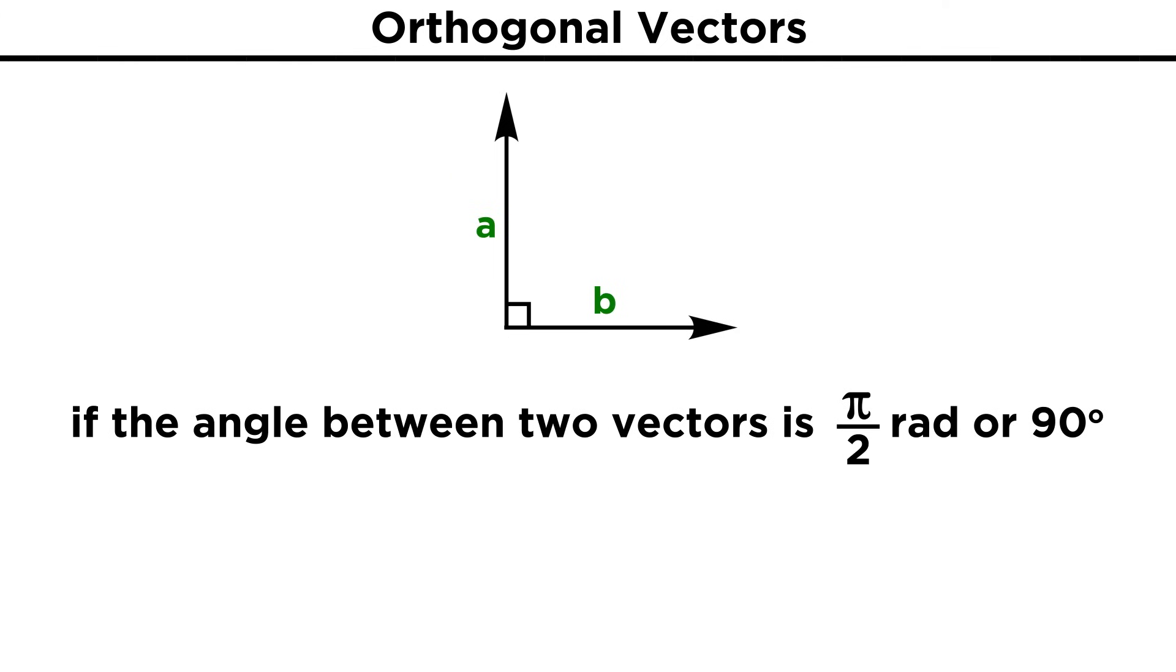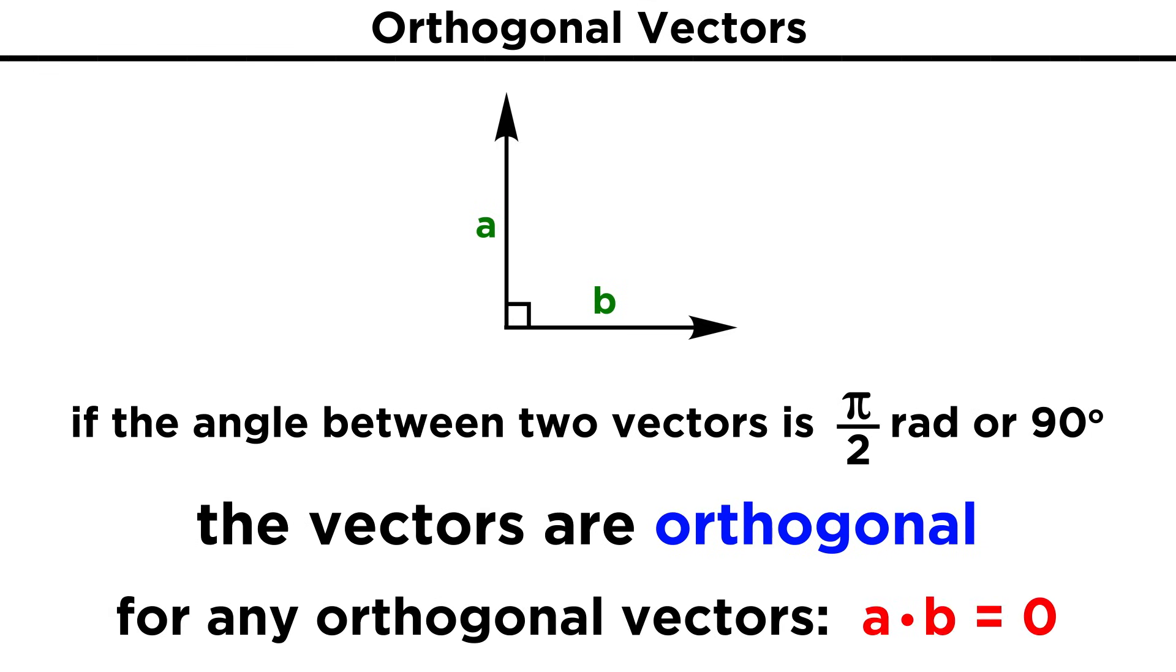This operation leads us to another definition. We want to understand that if the angle between two vectors is half pi radians, or ninety degrees, these vectors are orthogonal. This pretty much means the same thing as being perpendicular to one another, and an important thing to note is that any two orthogonal vectors will always give a dot product of zero, because the cosine of half pi is zero. This means that if you are computing a dot product, and you get zero, those two vectors are orthogonal.